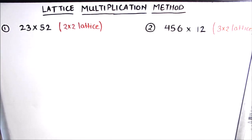Hello students. Today in this video we are going to learn the lattice multiplication method, also known as the Chinese multiplication method. Lattice multiplication is a written method of multiplying numbers. It is usually used when multiplying a two-digit number by a two-digit number, but it can also be used for bigger numbers like a three-digit number by a two-digit number, or a three-digit by a three-digit number.